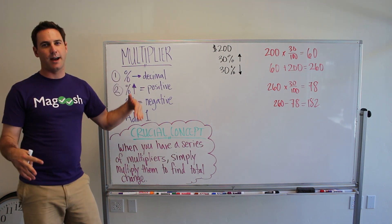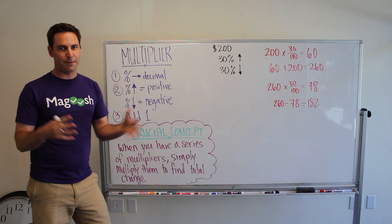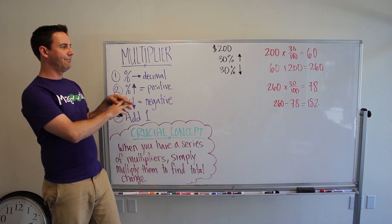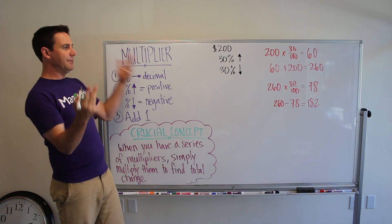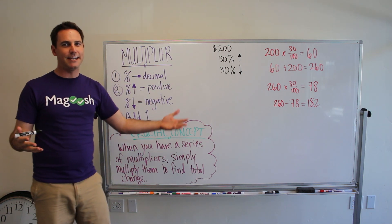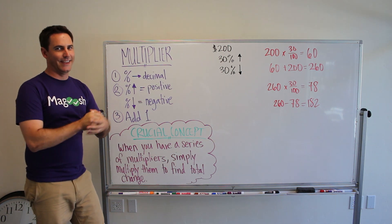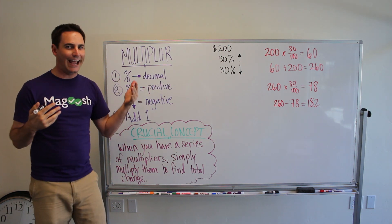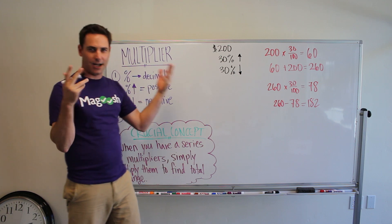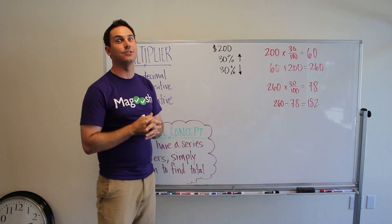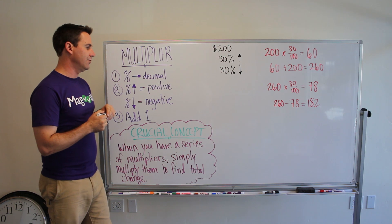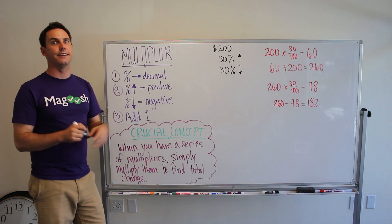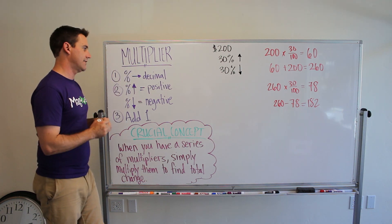So what is a multiplier? A multiplier is simply converting your percent into a decimal and then using that as a factor to multiply by your price, cost, or whatever is changing. Don't worry too much about what it is — let's just see what it does and it'll make a lot more sense.